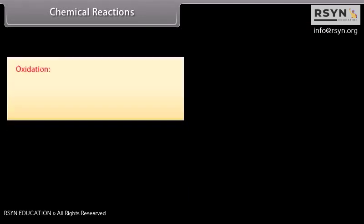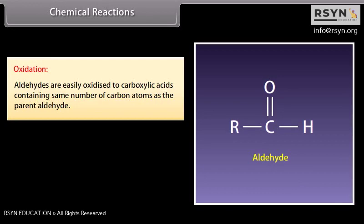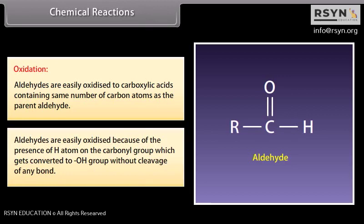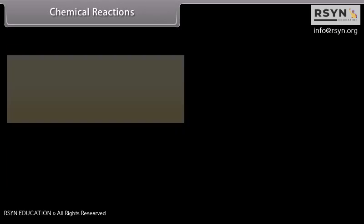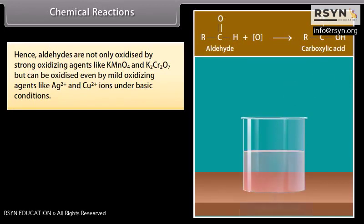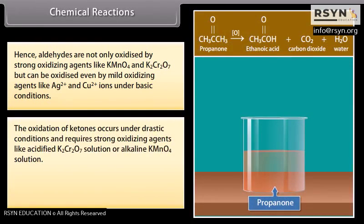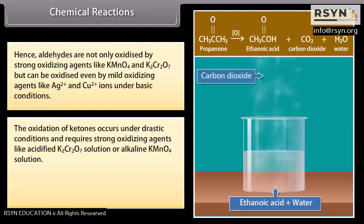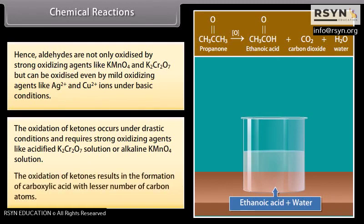Oxidation: aldehydes are easily oxidized to carboxylic acids containing the same number of carbon atoms as the parent aldehyde. Aldehydes are easily oxidized because of the presence of a hydrogen atom on the carbonyl group, which gets converted to an OH group without cleavage of any bond. Hence, aldehydes are oxidized not only by strong oxidizing agents like potassium permanganate and potassium dichromate, but also by mild oxidizing agents like Ag2+ and Cu2+ ions under basic conditions. The oxidation of ketones occurs under drastic conditions and requires strong oxidizing agents like acidified potassium dichromate or alkaline potassium permanganate solution, and results in carboxylic acids with fewer carbon atoms.